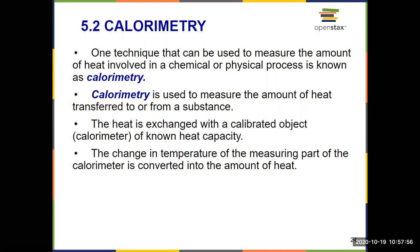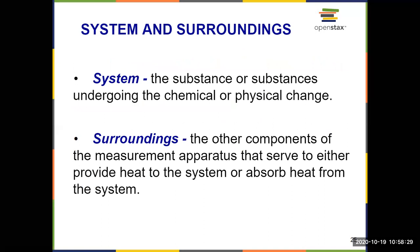To figure this out, we look at the heat exchange with something that we've previously calibrated — that's known as the calorimeter, where we know the heat capacity, we know the mass, and we can look at the temperature change. The change in temperature in the calorimeter can then be converted to find the heat. It's important that we distinguish between the system and the surroundings. The substance undergoing the change is known as the system — a chemical reaction or a physical object.